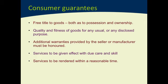The third guarantee is that additional warranties provided by the seller or manufacturer must be honoured. If an overseas company provides warranties with a product and you purchase that product in Australia, you get both the manufacturer's warranty and the benefit of the Australian Consumer Law. Whichever is more generous to you is the one you can rely on to resolve the dispute—because those additional warranties become binding not just as warranties but also through the ACL. There is a double whammy of obligation upon the seller or manufacturer.